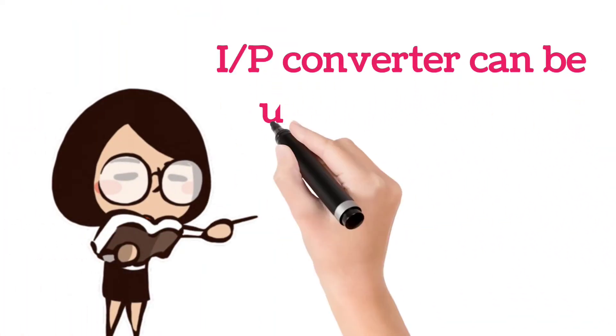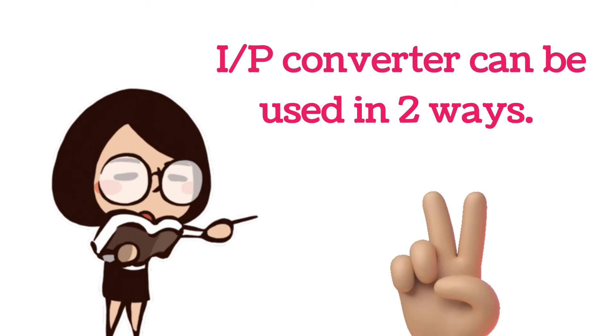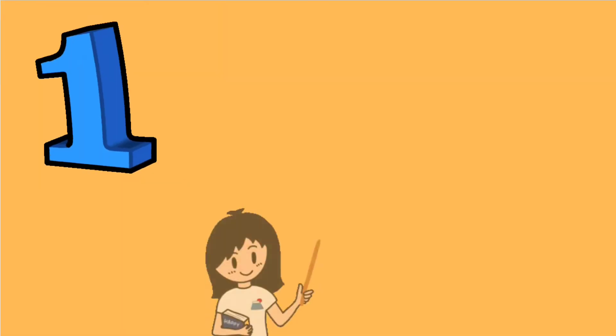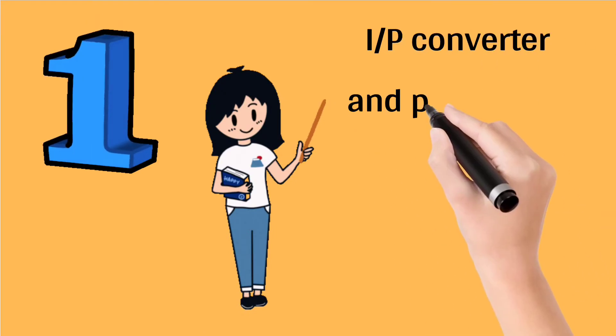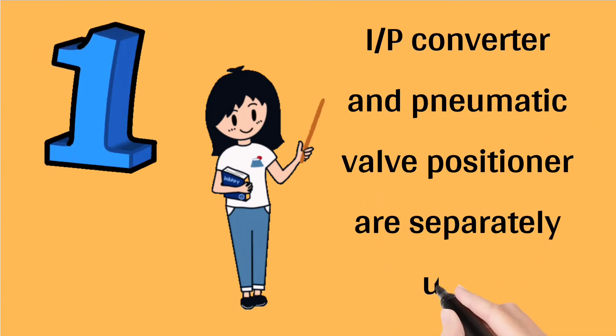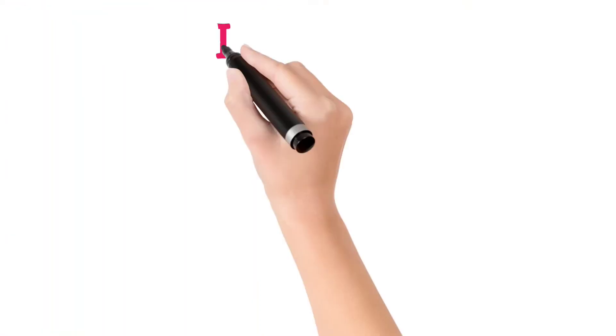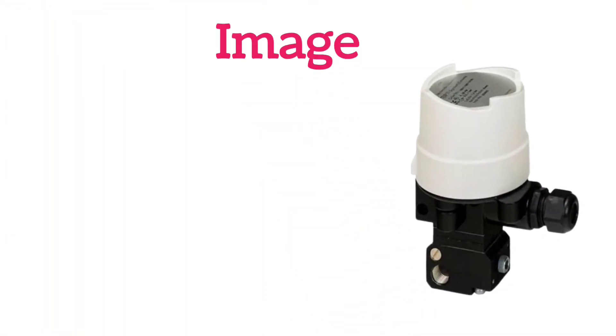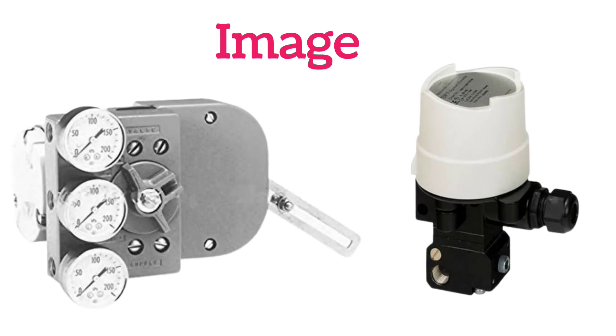I to P converter may be used in two ways. The first one is when we use I to P converter and pneumatic positioner separately. As you can see in the images, I to P converter is at the right side and pneumatic positioner is at the left side.